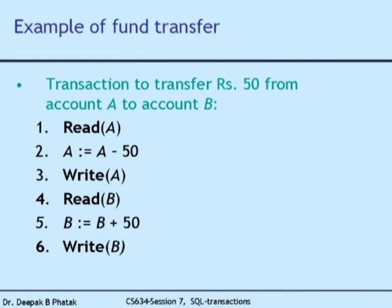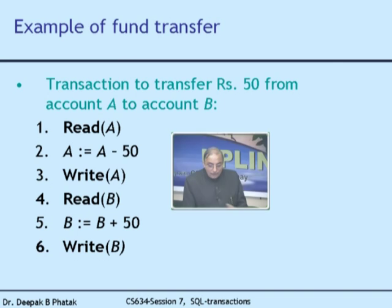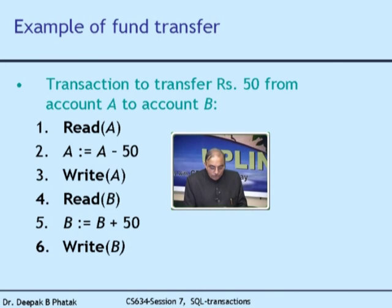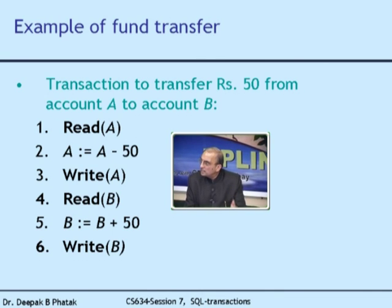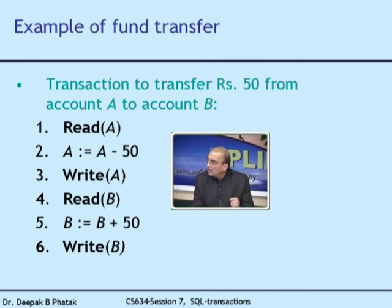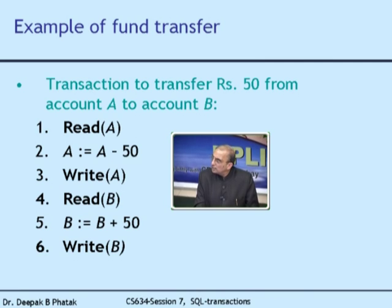Then subtract 50 rupees from that balance and write back A. B is the other friend's account, so read the balance in B, add 50 rupees to B, and write B. These six steps will ensure that my transaction is successfully done. You can also notice that somewhere in the middle the database will be inconsistent — account A has 50 rupees less but account B still has the old value.